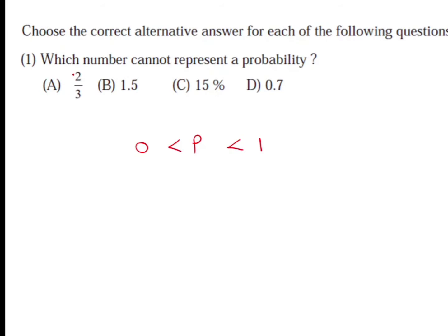If we check the first option, 2/3 can be written as 0.66, which is greater than 0 and less than 1, so it can represent a probability. Option C, 15%, means 15/100 = 0.15, which is also greater than 0 and less than 1. Option D, 0.7, is again greater than 0 and less than 1. Only option B, 1.5, is greater than 1, and the probability of any event cannot be greater than 1. So option B cannot represent the probability.